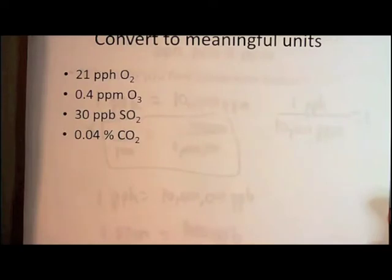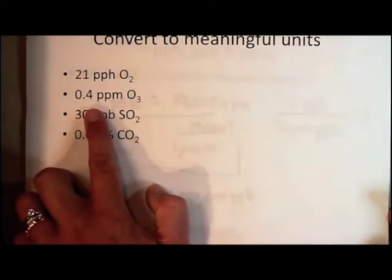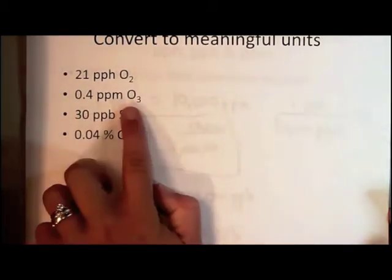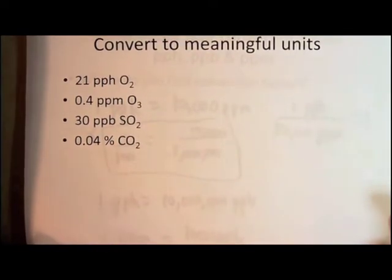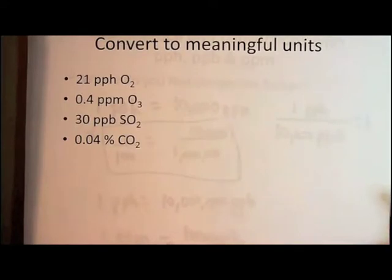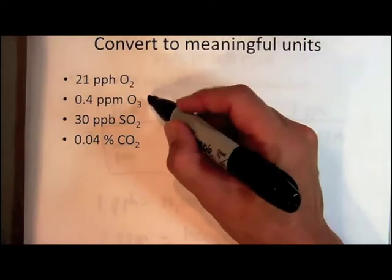But this 0.4 parts per million, again if I went ahead and drew a beaker with a million parts in it and then I got down to trying to demonstrate what is 0.4 parts of an ozone, it's going to be difficult. So it's actually better to present this concentration in units of parts per billion.